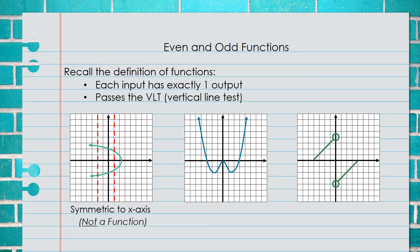For the middle graph, we see that it is symmetric with respect to the y-axis. To determine if this is a function, we perform the vertical line test by placing a few vertical lines on the graph. Since the vertical line only crosses the graph one time, this is a function.